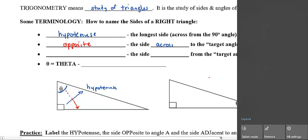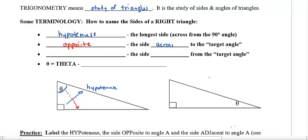And then there's another one. There is another side — the one I call next to the target angle. Of course, there are two sides next to it, but the longest one is the hypotenuse. So, the one next to it over here is called the adjacent. The target angle also has a name — it's Greek. It's called theta. So, that's the target angle, or the angle that you know.